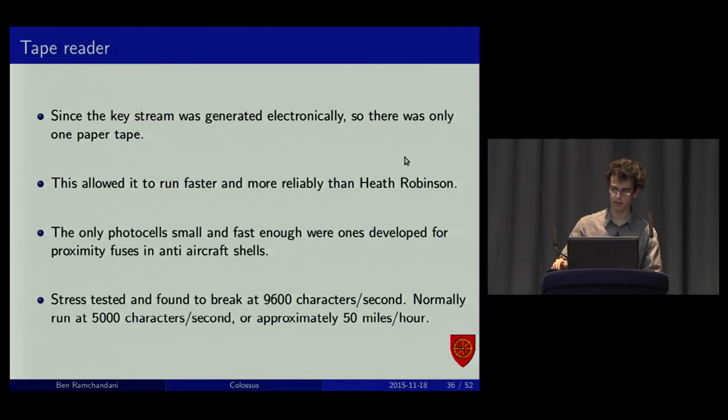The tape reader. Chi stream generated electronically. You only needed one tape. This solved all the synchronization problems that Heath Robinson had. It allowed it to run much faster, much more reliably. And it ran at 5,000 characters a second. That means the paper tape is going about 50 miles an hour. So, this is really quite fast. The sprocket that turned the tape actually generated the clock pulses that were used by the rest of the machine.